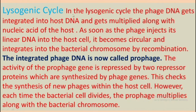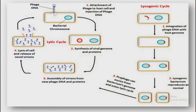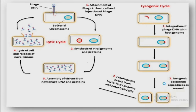Lysogenic cycle. In the lysogenic cycle, the phage DNA gets integrated into the host DNA — the bacterial DNA. As soon as the host DNA gets multiplied, the phage DNA also starts to get multiplied. The lysogenic bacteria then reproduce normally. This integrated phage DNA is called the prophage.